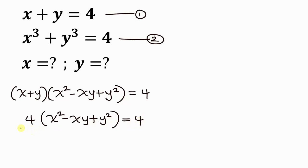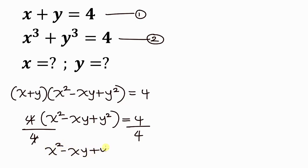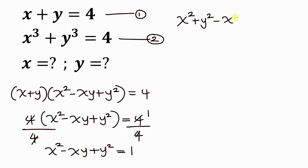Our next step is to divide both sides by 4. The 4s cancel, leaving x squared minus xy plus y squared equal to 1. I can rewrite this as x squared plus y squared minus xy equal to 1.